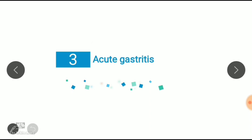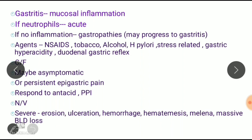Inflammatory conditions of the stomach include gastritis — inflammation of the gastric mucosa. Clinically, patients may be asymptomatic or present with epigastric pain that responds to antacids and proton pump inhibitors, plus nausea and vomiting. If inflammation is mainly caused by neutrophils it is acute gastritis; if there is no active inflammation it is called gastropathy. Causes include NSAIDs, tobacco, alcohol, stress, and gastric hyperacidity.